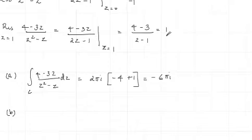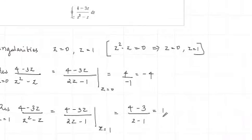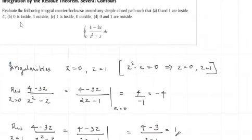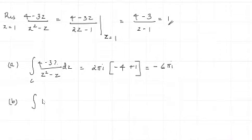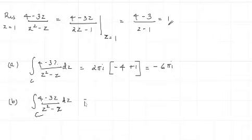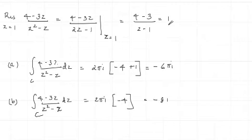For Part B, 0 is inside and 1 is outside. So we only consider the residue at Z = 0, which is −4. The integral value equals 2πi × (−4), which is equal to −8πi.